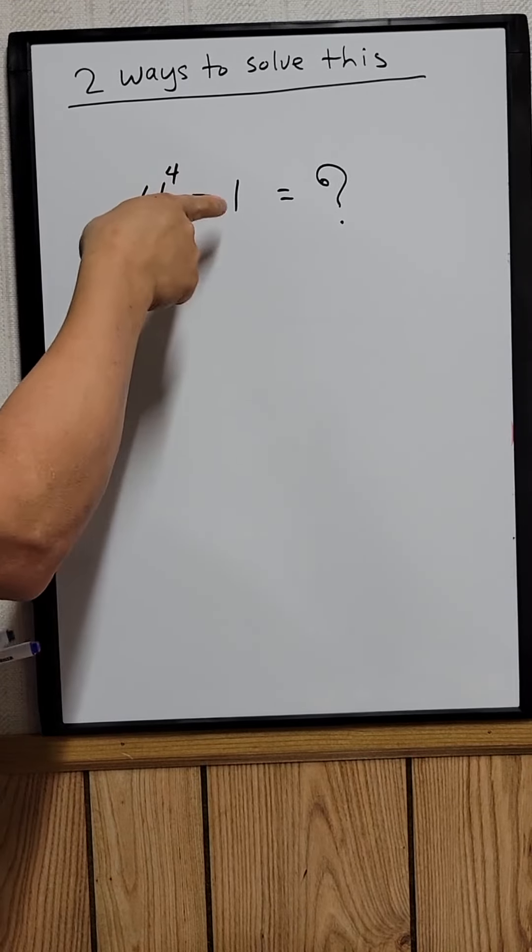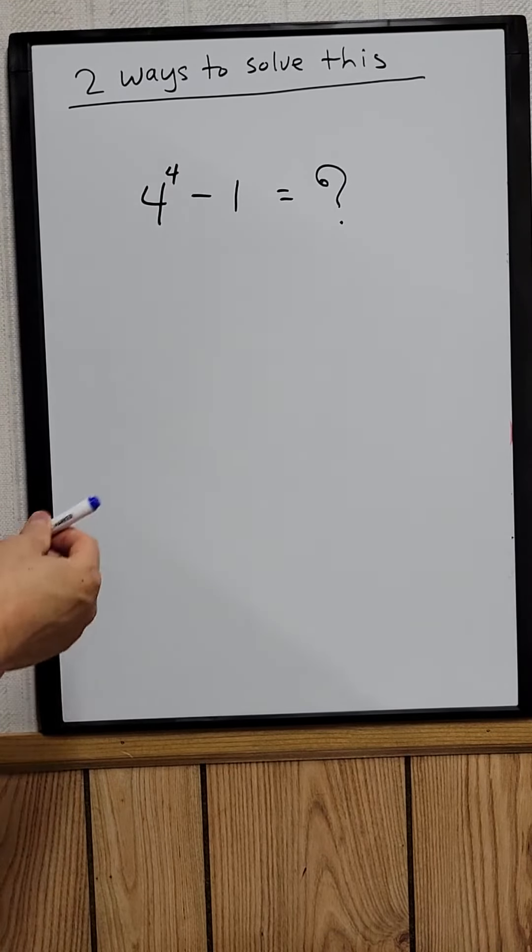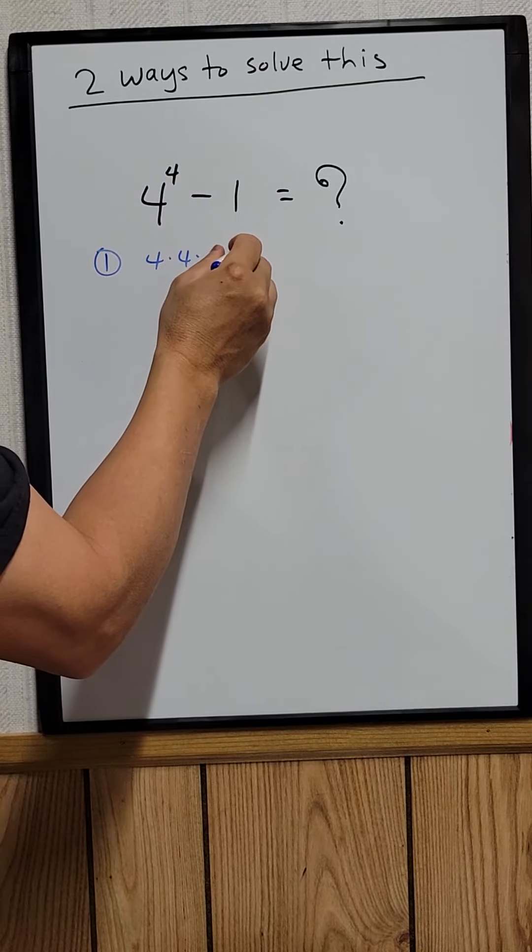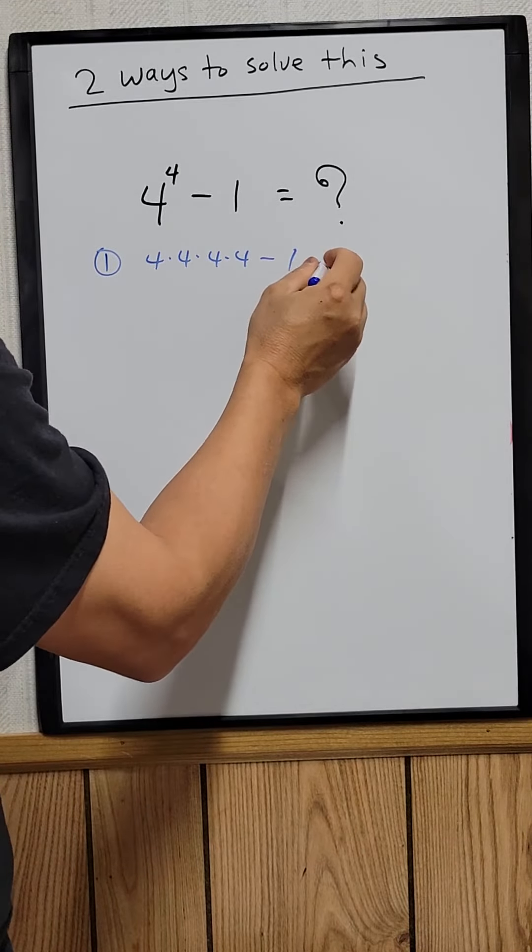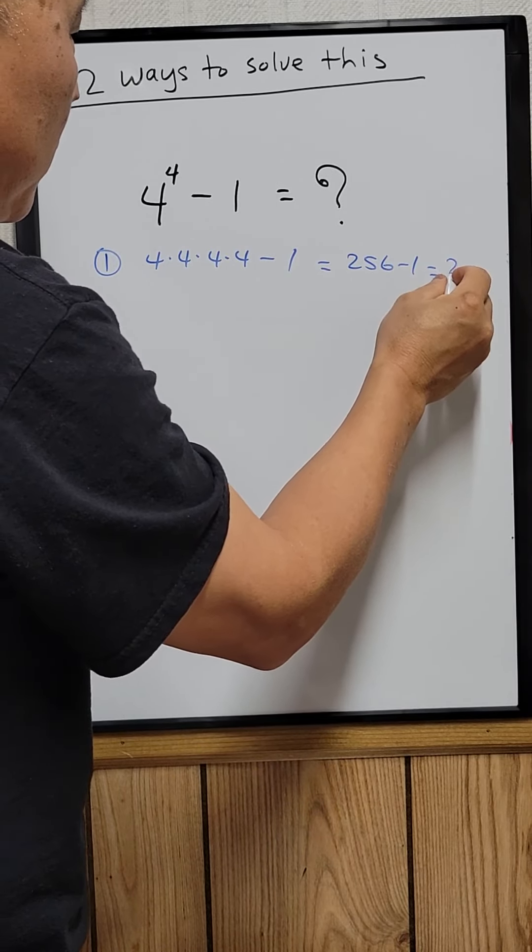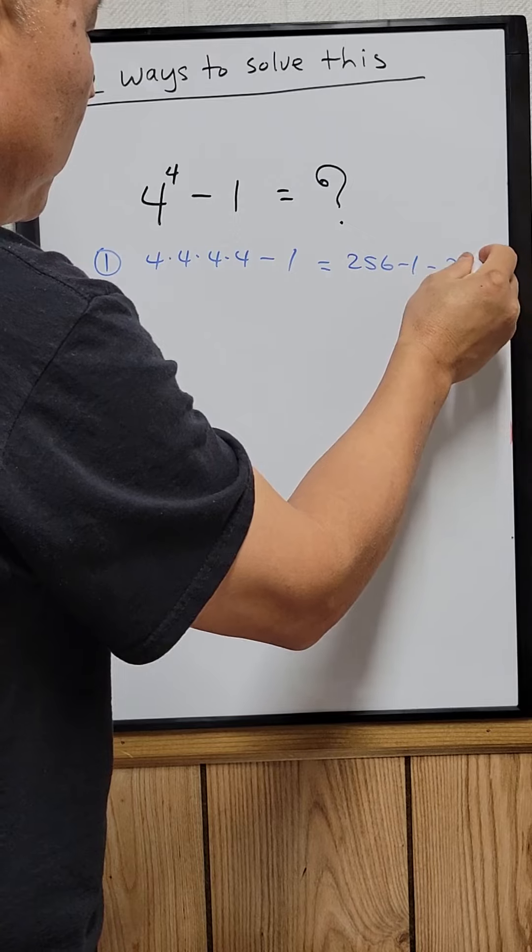So 4 to the 4 minus 1. The 4 to the 4 means just 4 times 4 times 4 times 4 minus 1. 4 to the 4 is 256, minus 1 would be 255. That's the answer.